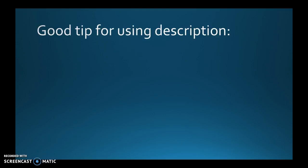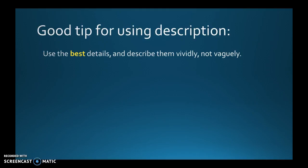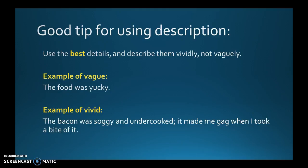A good tip for using description: use the best details and describe them vividly, not vaguely. For example, 'The food was yucky' is vague. A more vivid detail would be: 'The bacon was soggy and undercooked — it made me gag when I took a bite of it.' When writing your narrative, make sure you use good description. That'll make for a better, more enjoyable paper.